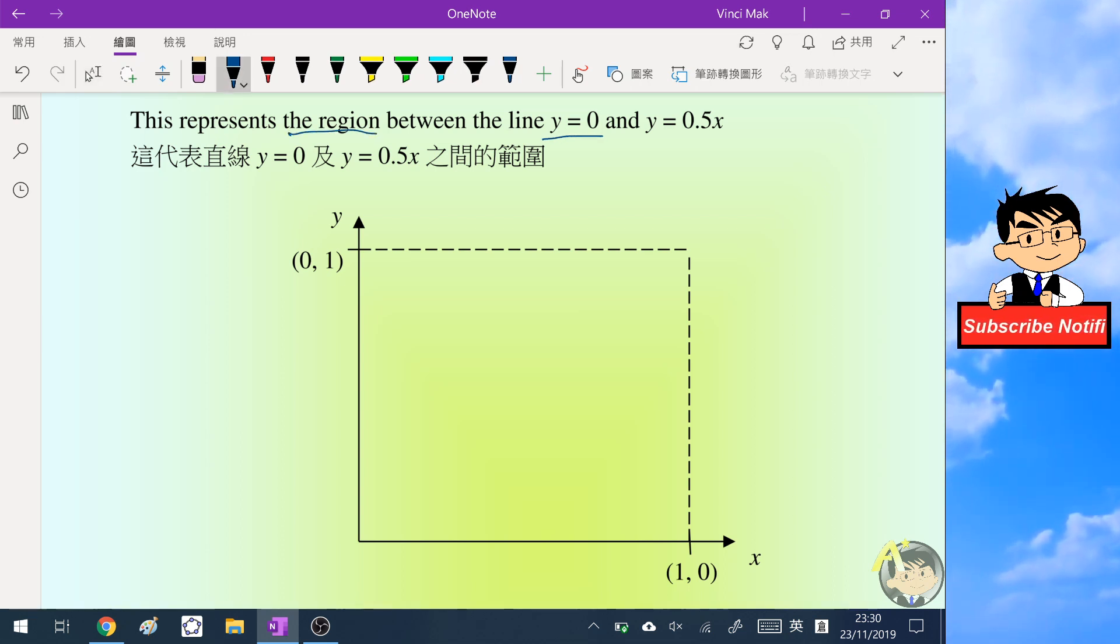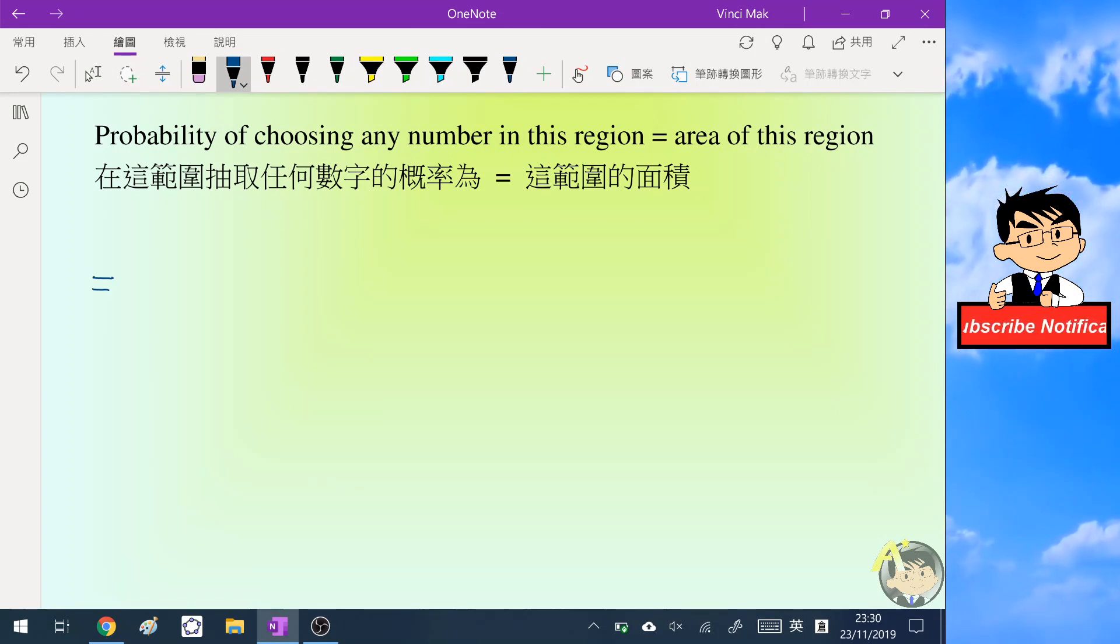In fact, the inequality represents the region between the line y equals 0 and y equals 0.5x. So we draw two lines: one is y equals 0, which is the x-axis itself, and the other is y equals 0.5x, which is a line passing through the origin. I join this line and then we need to find the area of this region. This is easy: it's one half times the base, which is one, times the height, which is 0.5, and it equals one over four.